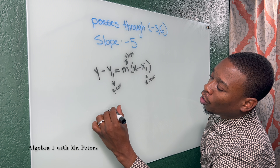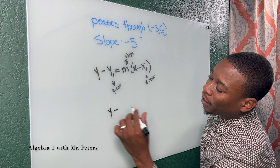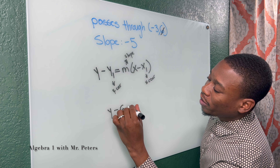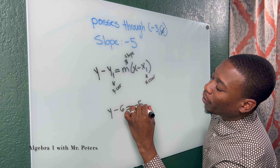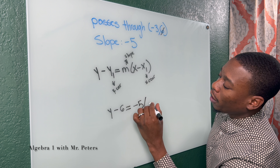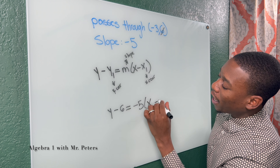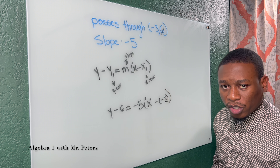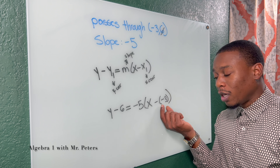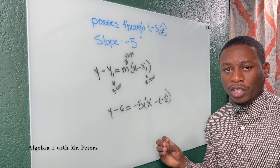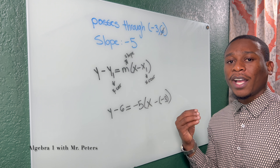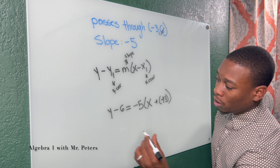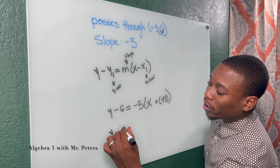So now we know Y minus Y1 — that's six. So Y minus six is equal to the slope, negative five, and in parentheses X minus negative three. Always make sure that you put the negative in parentheses because they're going to try to trick you. The original equation already has subtraction, so this turns into addition.